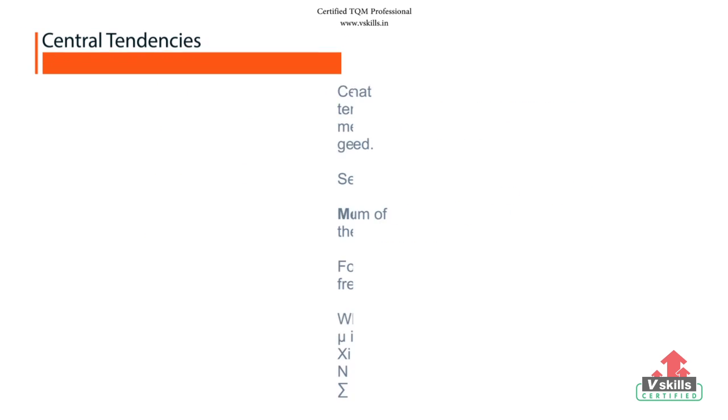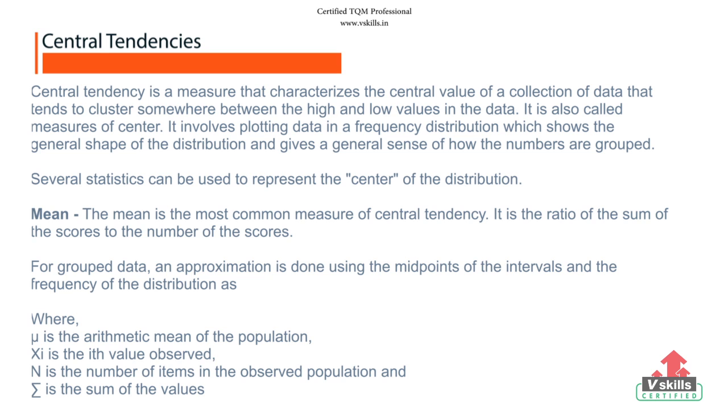Central tendency is a measure that characterizes the central value of a collection of data that tends to cluster somewhere between the high and low values in the data. Several statistics can be used to represent the center of the distribution. Mean. The mean is the most common method of central tendency.